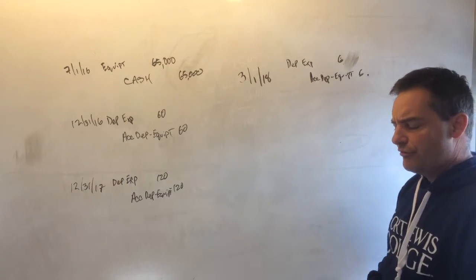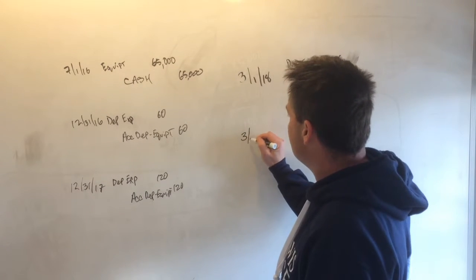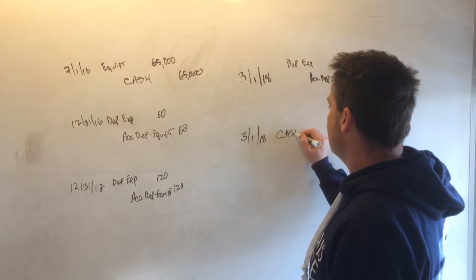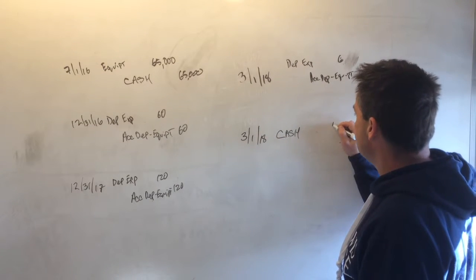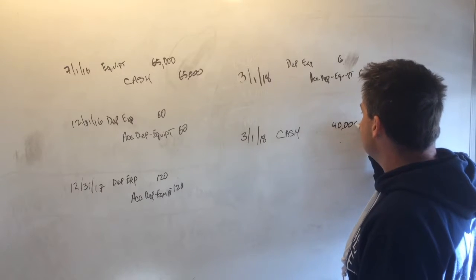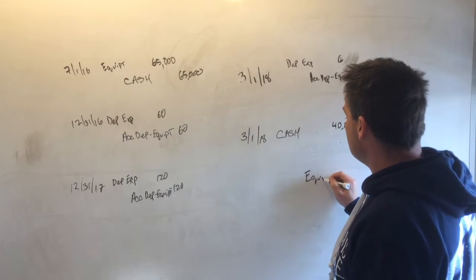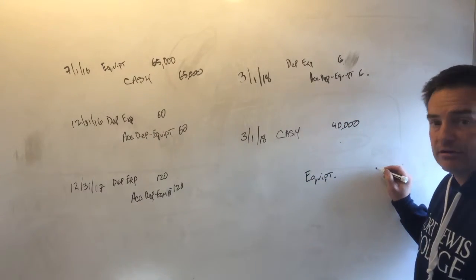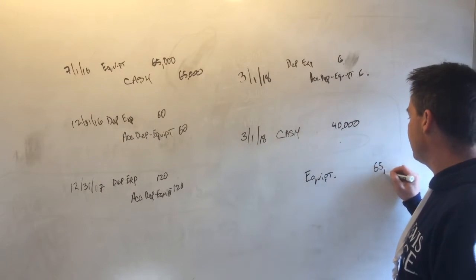I think I said we sold it for $40,000. So the second part of this journal entry is you would receive $40,000 of cash, we would debit cash for $40,000. You're going to credit the equipment account for whatever's in the equipment account, and what's in the equipment account is $65,000.